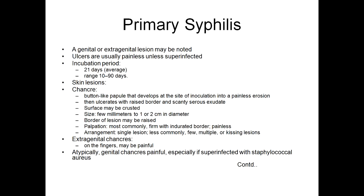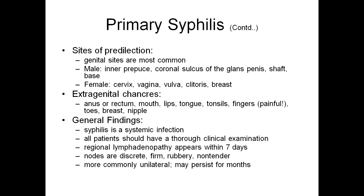Extra-genital chancres on the fingers can be painful atypically. Genital chancres are painful if super-infected with staphylococcal infection. Sites of predilection: genital sites are the most common in both males and females. Extra-genital chancres can be seen on the anus, rectum, mouth, lips, tongue, tonsils, fingers, breast, and nipple — essentially anywhere.